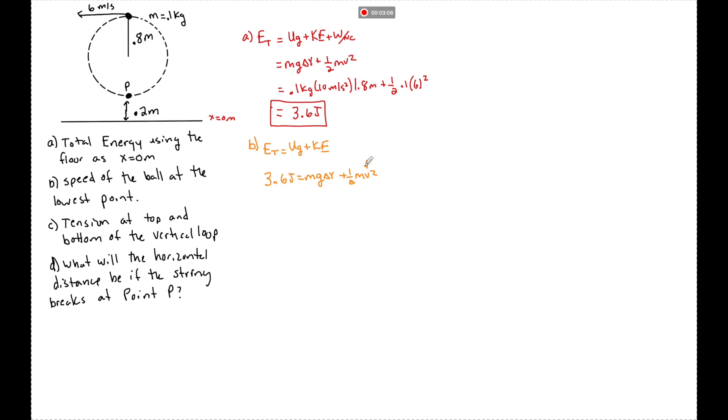And this question is asking, what is the speed at the bottom of the loop? So I substitute in 3.6 equals 0.1 times 10. Now it's only at a height of 0.2 above the floor because it's at its lowest point plus one half, 0.1 v squared. So v squared is going to be equal to 3.4 divided by 0.05, which is going to be equal to 8.2 meters per second.